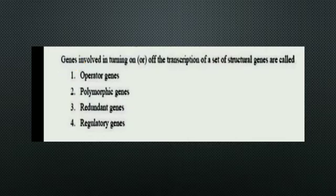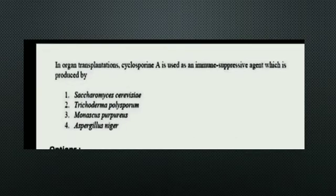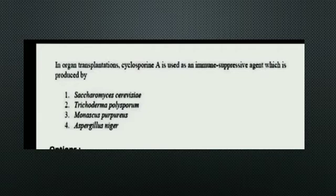The next question: In organ transplantation, Cyclosporine A is used as an immunosuppressive agent. It is produced by which of the following? The options are Saccharomyces cerevisiae, Trichoderma polysporum, Monascus purpureus, and Aspergillus niger. The right answer is Option 2, Trichoderma polysporum.